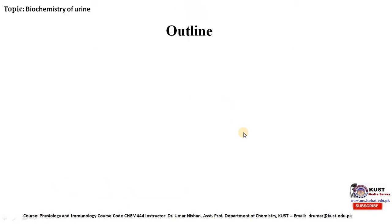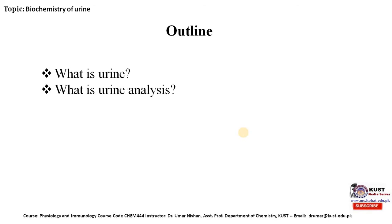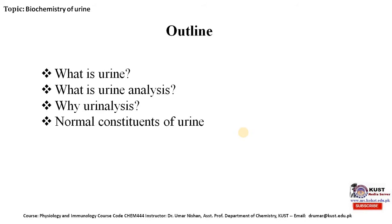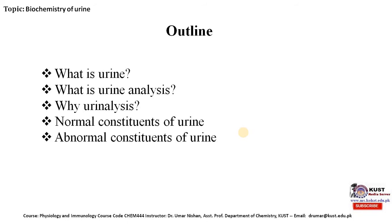The outline for today's lecture on Biochemistry of Urine is: we will study about what is urine, then what is urine analysis and why urine analysis is important. Then we will study the normal constituents of urine, because urine is a mixture consisting of so many things. After that, we will study about abnormal constituents of urine, which are indicative of different types of diseases.